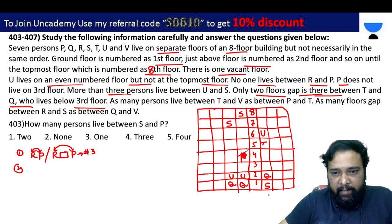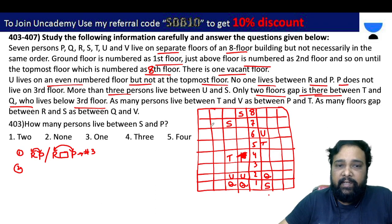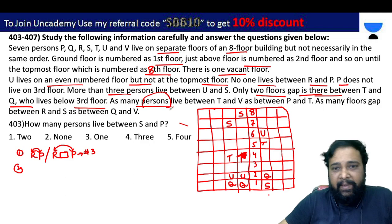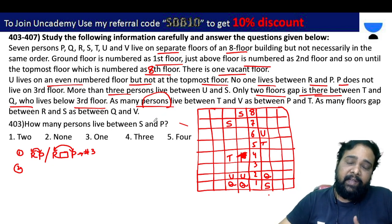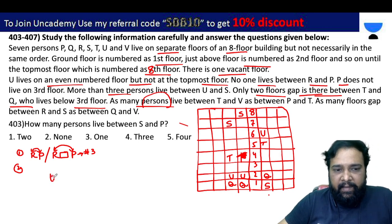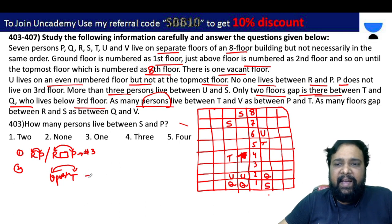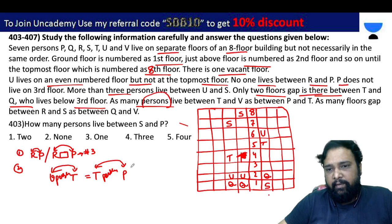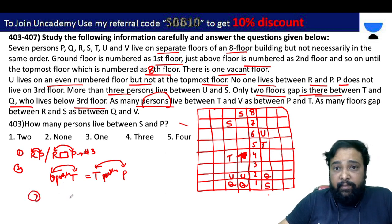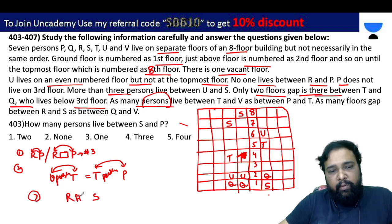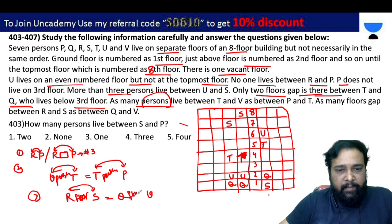We have first-place possibilities here. As many persons are between T and V as there are between R and S — the same number of people. So the same number of floors between T and V and between Q and V. Same number of floors between Q and V.